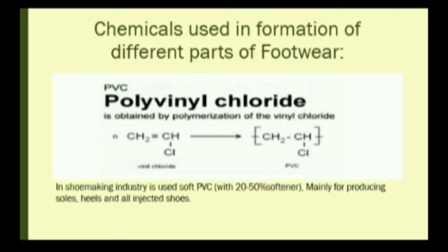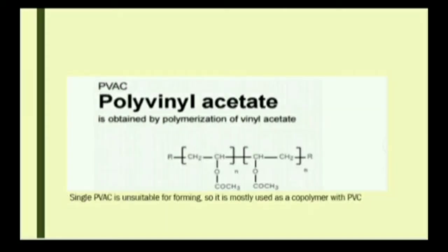What chemicals are used in the formation of different parts of footwear? First, polyvinyl chloride (PVC), which is obtained by the polymerization of vinyl chloride. Second, polyvinyl acetate (PVAC), which is obtained by the polymerization of vinyl acetate. Single PVAC is unsuitable for forming on its own, so it is mostly used as a co-polymer with PVC.